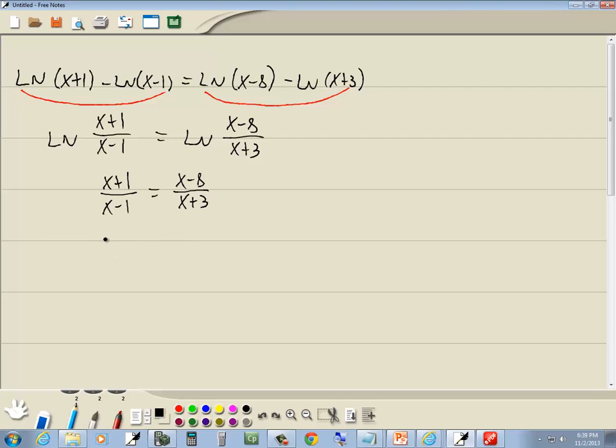Now this is a rational equation, and the steps for solving a rational equation is we're going to multiply everything by the LCM of all our denominators. Well, we've got x minus 1 and x plus 3. Since they're different factors, our LCM will be x minus 1 and x plus 3. And that's where we multiply it by the fraction on the left side and the fraction on the right side.